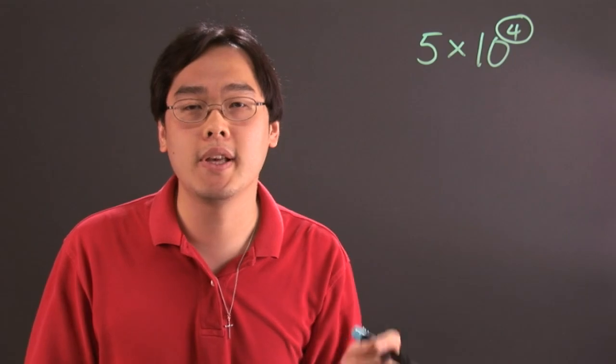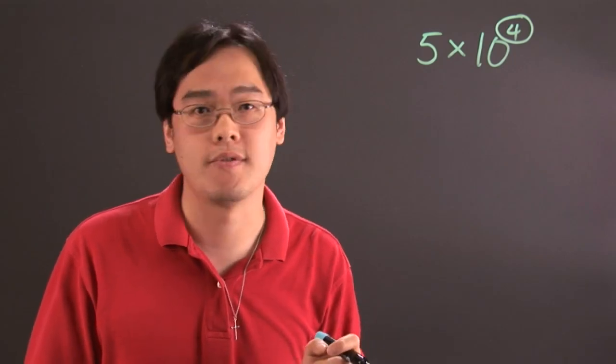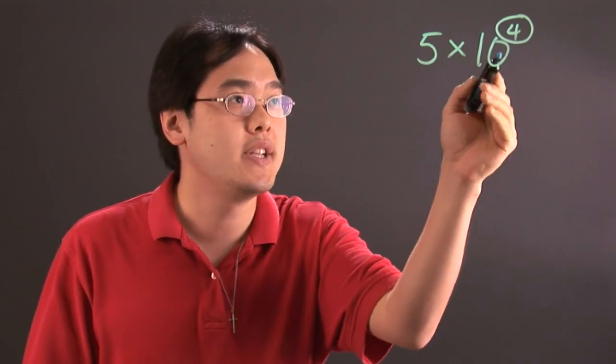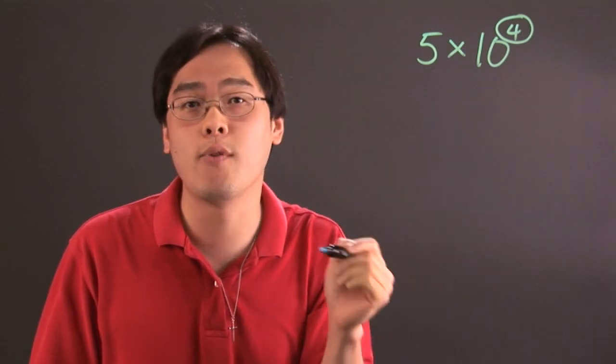if you have a positive exponent of 10, that tells you how many places to the right you're going to be shifting the decimal. So, for example, 10 to the 4th means you're going to be shifting the decimal to the right four places.